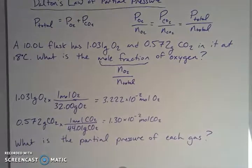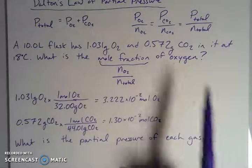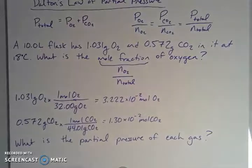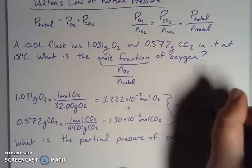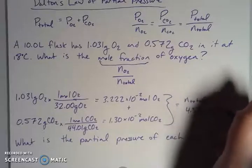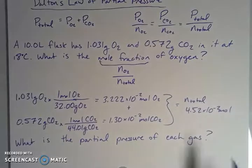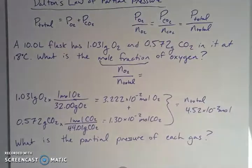Now in order to get the mole fraction, I need to take the part, which in this case it's asking about the oxygen specifically, over the total. So I need the sum of these guys. And when I take the sum, I end up with n_total, my total number of moles in the system, which in this case is 4.52 times 10 to the negative 2nd.